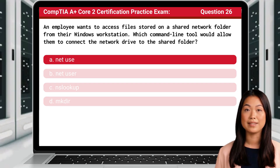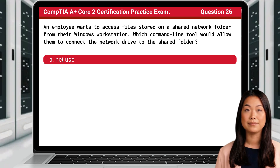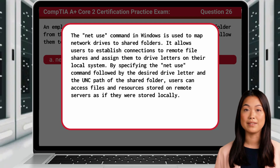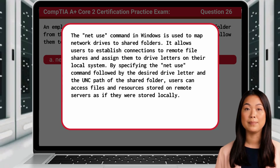The answer is A: Net use. The net use command in Windows is used to map network drives to shared folders. It allows users to establish connections to remote file shares and assign them to drive letters on their local system. By specifying the net use command followed by the desired drive letter and the UNC path of the shared folder, users can access files and resources stored on remote servers as if they were stored locally.